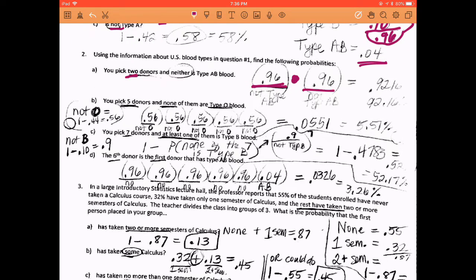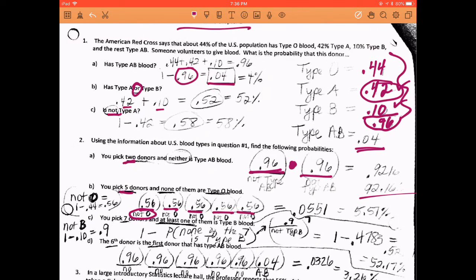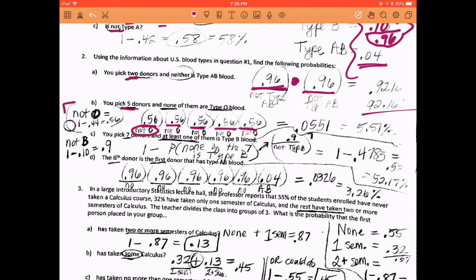Alright, question B. This time you pick five donors. So now that you're going to pick five donors, you are to determine the probability of none of them being type O. So all five of them are not O. So I wanted to recall how to figure out the probability of not O. Well, I can see up here O is 0.44. If O is 0.44, then the rest of that is 0.56. So 56% are not O. Therefore, I just put all five of those people as 0.56 probability. And that's how you get your 5.51%.